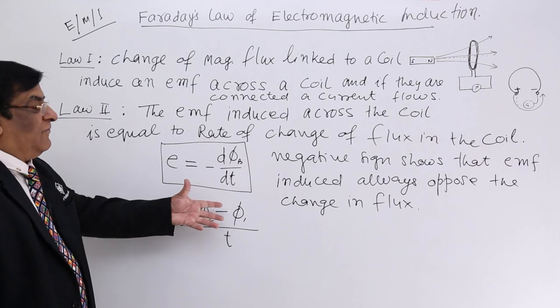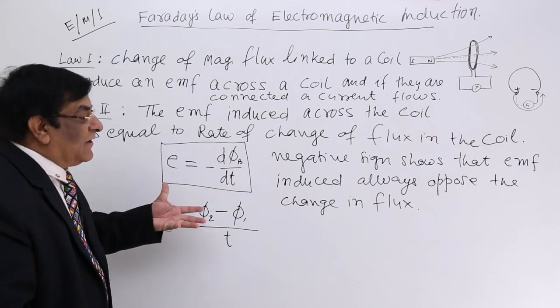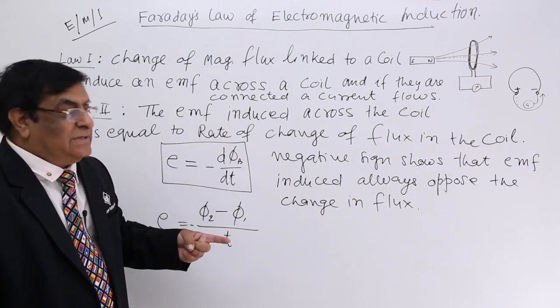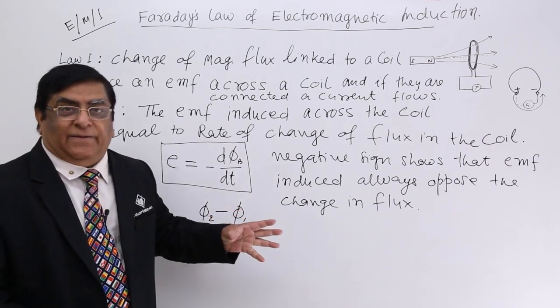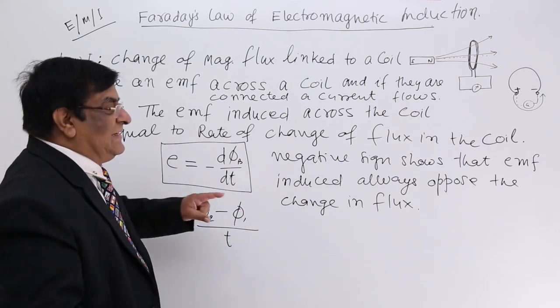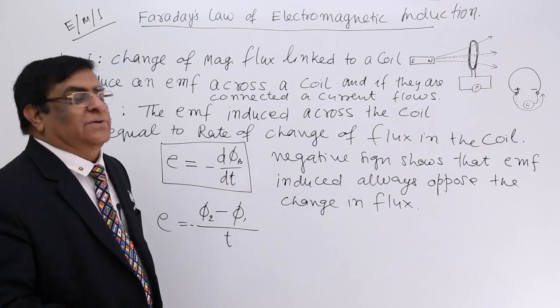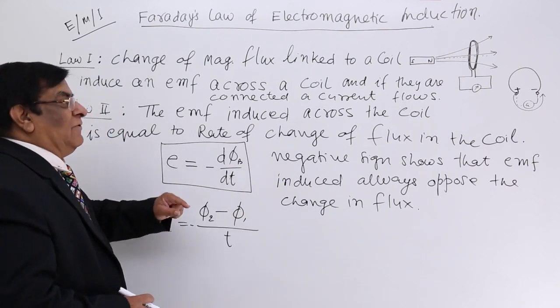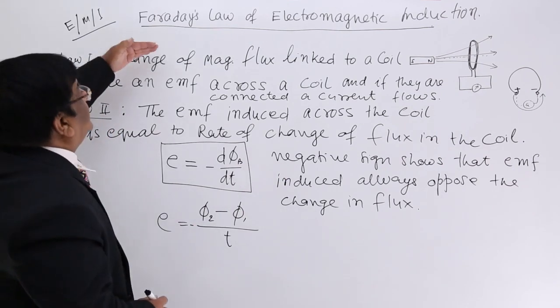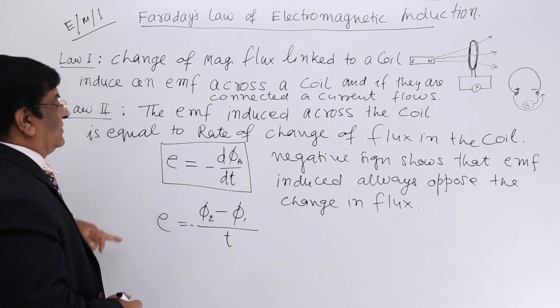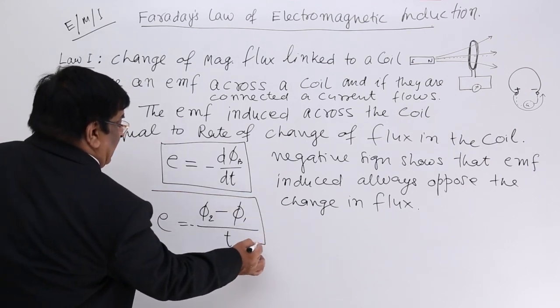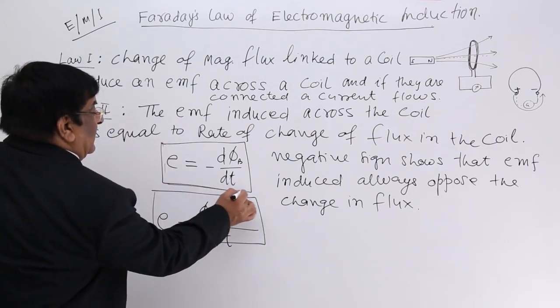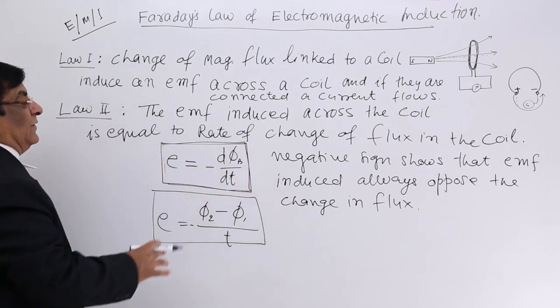Rate of change of flux, and this will be EMF. This will be the EMF when flux is changing. Flux we know, it is B into A. We will see how the flux is changed with reference to this formula, but that we will do in the next lecture. This is Faraday's law. This is very important and we will keep on doing this.